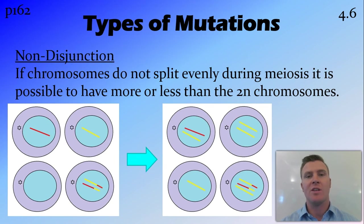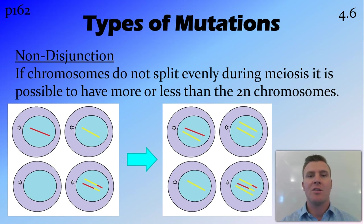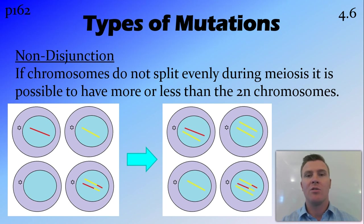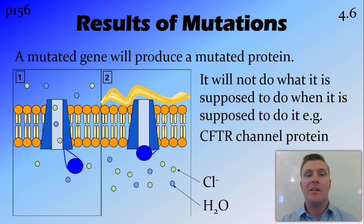The last type of mutation is a non-disjunction mutation. This occurs when chromosomes do not split up evenly during meiosis. There are two phases of cytokinesis in meiosis, and if the chromosomes don't split up perfectly, this can result in more chromosomes in one daughter cell and fewer than expected in the other.